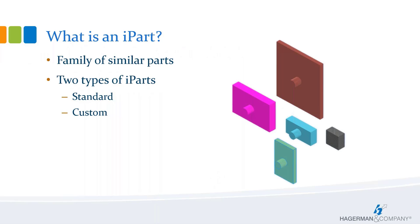Let's start with what is an iPart. An iPart is, simply put, a family of similar parts. For example, maybe channels, extrusions, nuts or bolts where the dimensions are similar, or the dimensions may be the same throughout your family but the material and color could be different, or maybe it's a combination of dimensions, materials, and colors — basically just a family of similar parts.